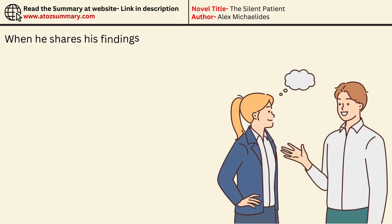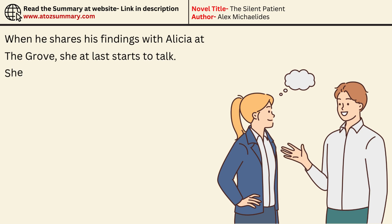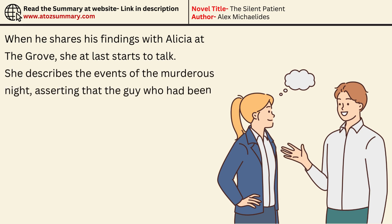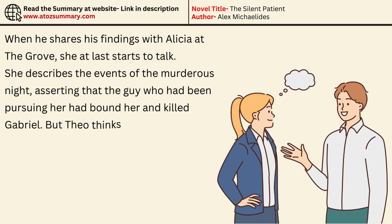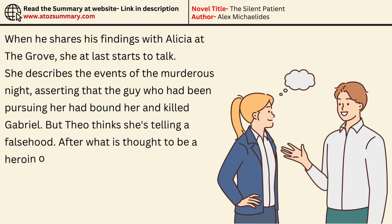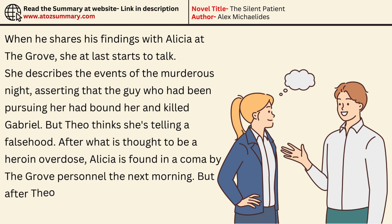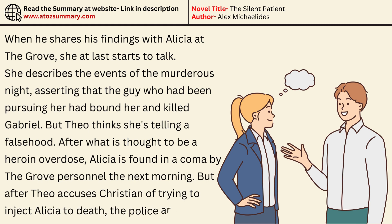When he shares his findings with Alicia at the Grove, she at last starts to talk. She describes the events of the murderous night, asserting that the man who had been pursuing her had bound her and killed Gabriel. But Theo thinks she's telling a falsehood. After what is thought to be a heroin overdose, Alicia is found in a coma by the Grove personnel the next morning. Theo accuses Christian of trying to inject Alicia to death, and the police are called.